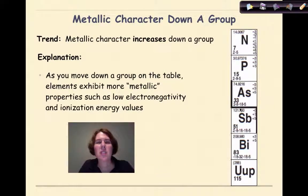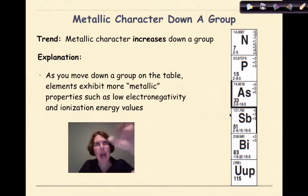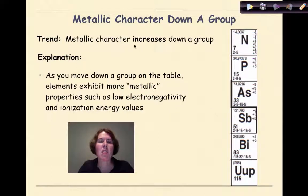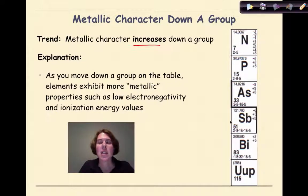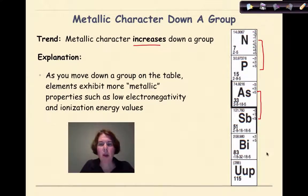Now let's talk about metallic character down a group. Questions on the Regents exam will typically involve groups 15 and 16, because it's in those groups that you see the greatest difference as you go down — from non-metals, to metalloids, to metals at the bottom. The general trend is metallic character is going to increase down a group. As you move down a group, elements exhibit more metallic properties, such as low electronegativity and ionization energy values. Group 15 is a classic example: nitrogen and phosphorus are non-metals at the top, arsenic and antimony are metalloids, and bismuth is a metal at the bottom. So metallic character increases as you go down a group.